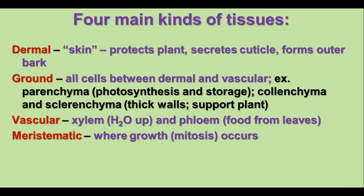There are four main kinds of tissues in plants, made of the different kinds of cells. Dermal tissue is like skin — it's the outermost layers, and it provides protection for the plant. These are the tissues that secrete the cuticle, which is a waxy coating found on leaves and some stems. This is also what forms the outer bark of trees.